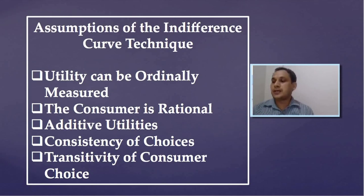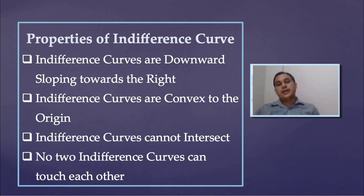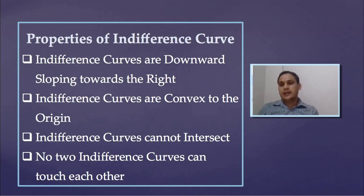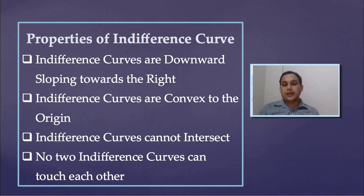These are the assumptions of the indifference curve. Now, the properties of the indifference curve. The first property is that indifference curves are downward sloping towards the right. This happens because when a consumer moves along an indifference curve, they have to sacrifice some units of one good to obtain an additional unit of the other. As a result, the indifference curve is always downward sloping and negatively sloped.